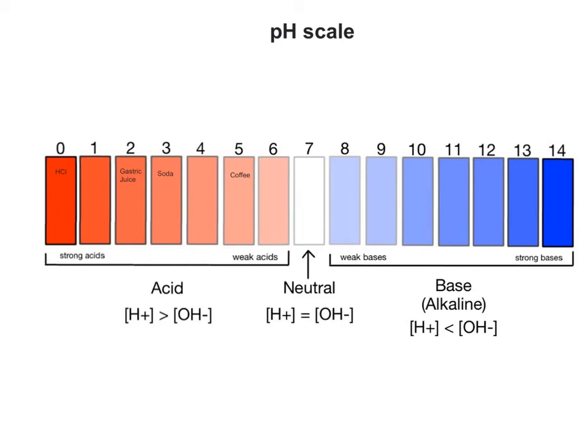Some pH values of common acids are coffee with a pH of 5, soda pop with a pH of 3, gastric juice in the stomach with a pH of 2, and hydrochloric acid with a pH of 0. Out of these examples, coffee is the weakest acid, having the highest pH below 7, and hydrochloric acid is the strongest acid, having the lowest pH.